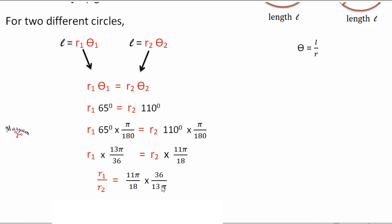So here, pi and pi get cancelled. After simplification, what you get is 22 by 13.